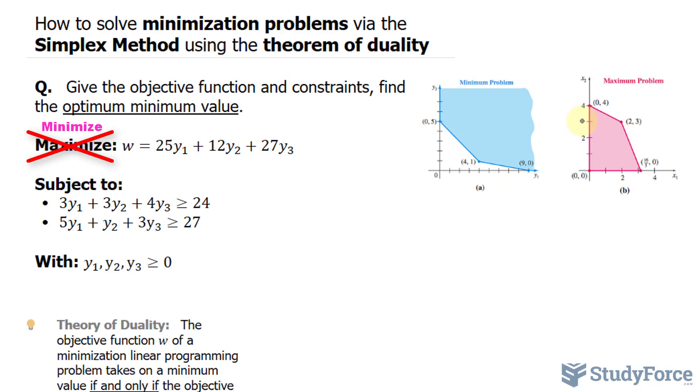What you want to do to tackle a problem like this, where you find the minimum rather than the maximum, is first, write your constraints and your objective function as an augmented matrix. Without including w, without including slack variables, just write them as they are.